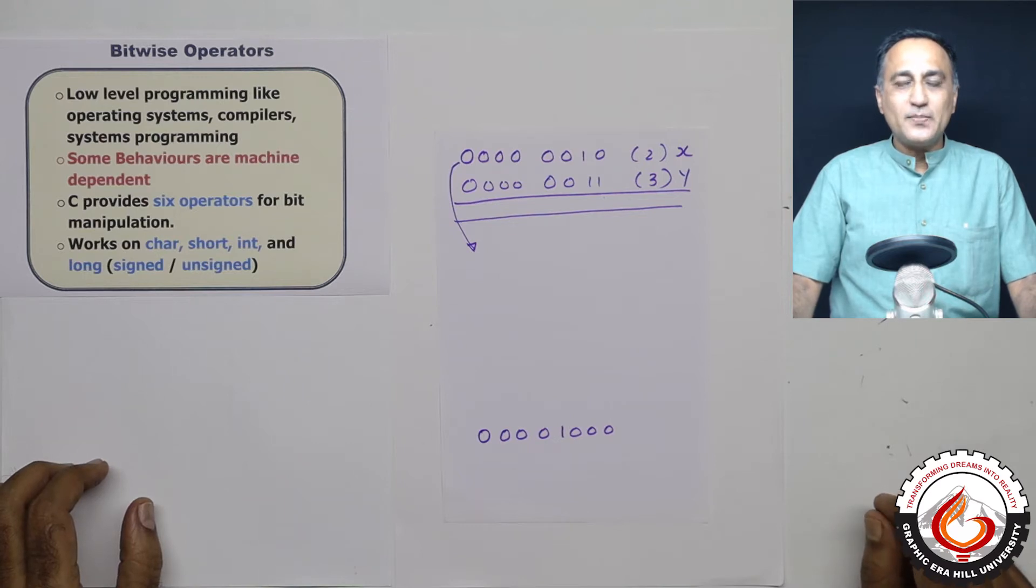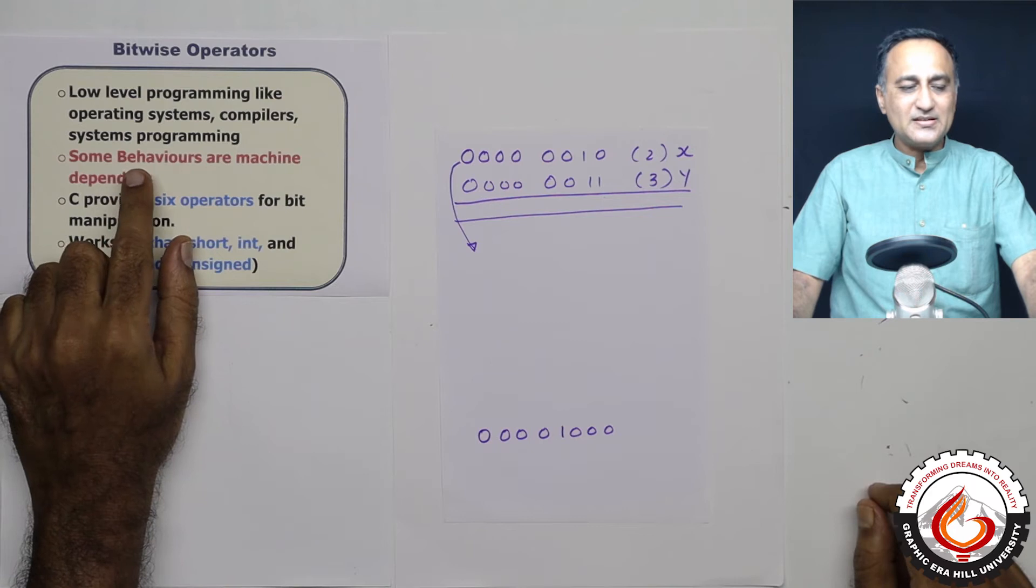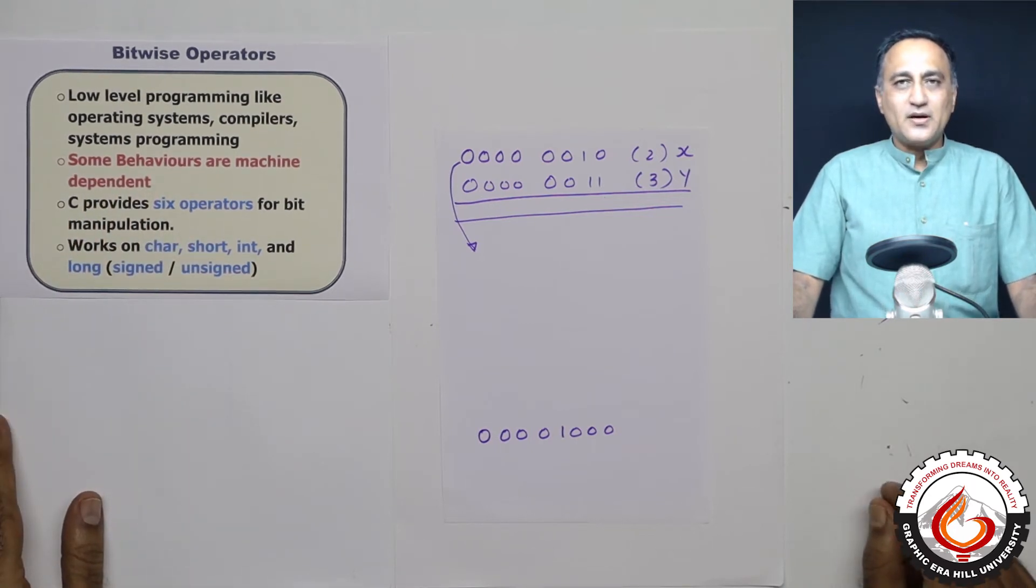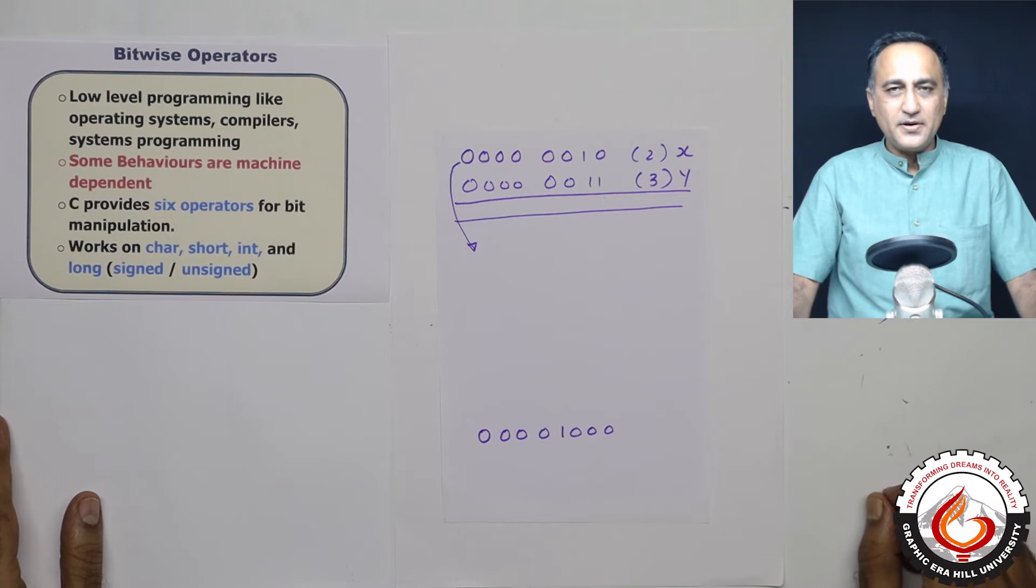They are used for low-level programming involving operating systems, compilers, and systems programming. If you're going to write device drivers, you'll be doing a lot of bitwise or bit manipulation, and C happens to be an excellent language for doing bit manipulation.